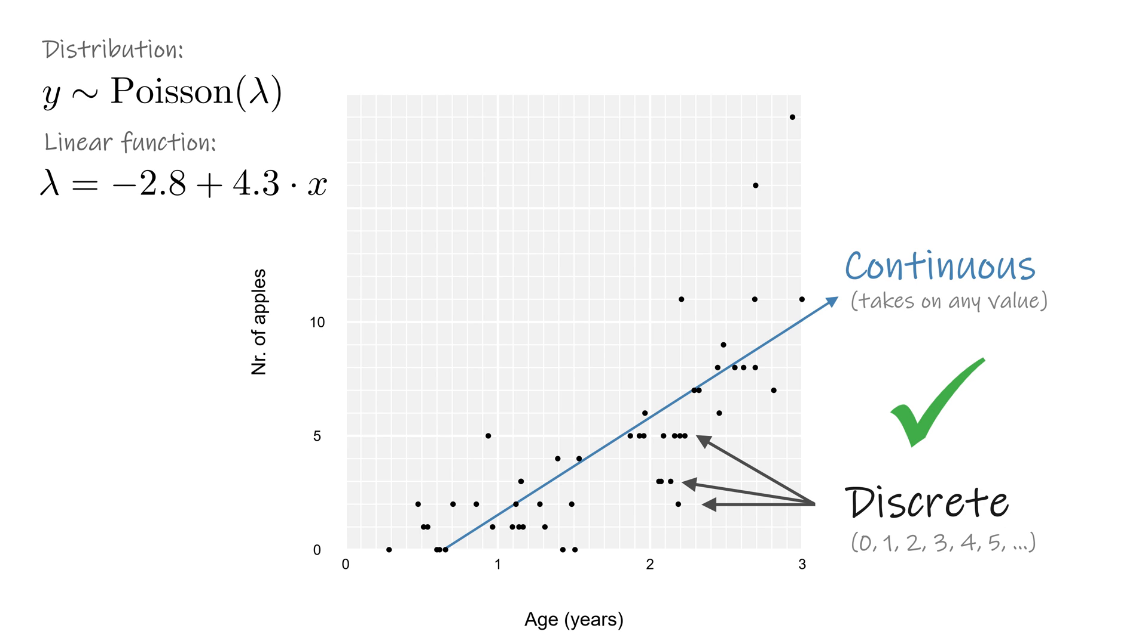Unlike raw counts, the rate, the average number of apples, doesn't have to be integer. If a tree yields one apple every two years, the rate is a half. For two apples every three years, the rate is two thirds. So lambda does not need to take on discrete values, and we can have a nice continuous model going through these observations.